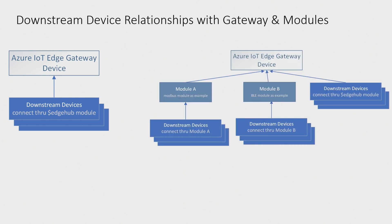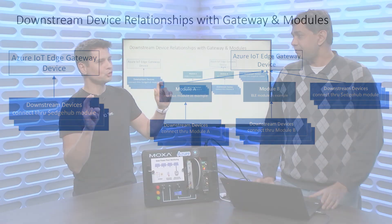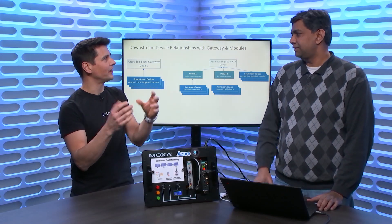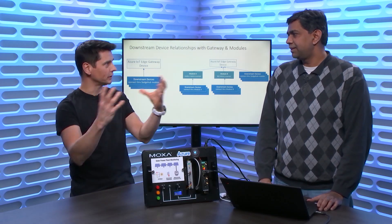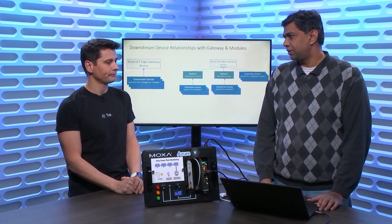We also support relationships with modules. There could be a BLE module discovering its own downstream devices — for instance, in a building scenario with thermostats and light switches working on different protocols. You can connect through multiple modules, each module discovering its own downstream devices, and there can also be a downstream device that is Wi-Fi enabled and connects directly. In the consumer space we'd call that a hub — like a Zigbee hub, which would be a module handling its own protocols.